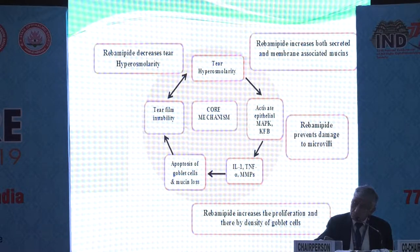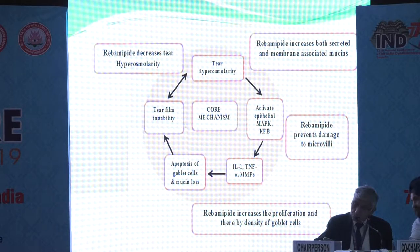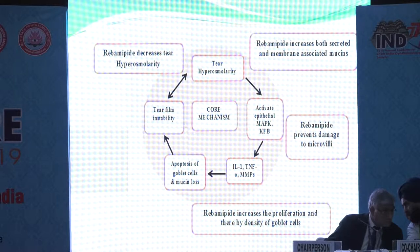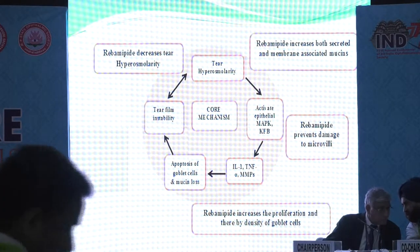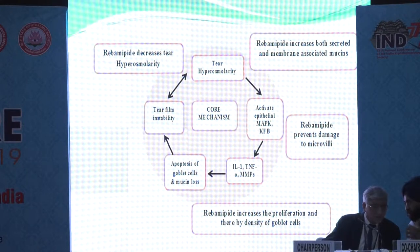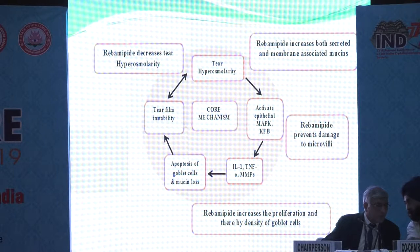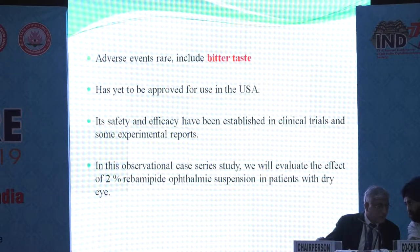The core mechanism of dry eye syndrome involves tear osmolarity, hyperosmolarity, inflammatory mediators, apoptosis, and tear instability. Rebamipide acts at four modes: it increases secreted and membrane-associated mucins, prevents damage of microvilli, increases the production of goblet cells, and decreases tear osmolarity.